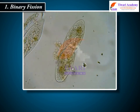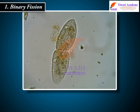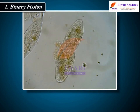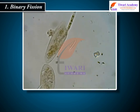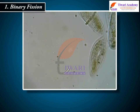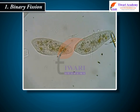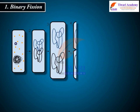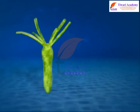Binary fission is the simplest and most common method of asexual reproduction, seen in unicellular organisms. It occurs under favorable environmental conditions. After the organism has grown to its full size, the parent divides into two daughter cells, which are genetically and morphologically similar. During this process, the nucleus divides into two, followed by division of the cytoplasm.